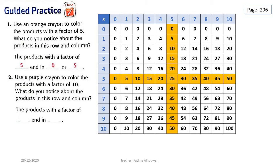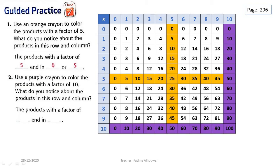Excellent, grade 3. Great job! Let's see question number 2. Use a purple crayon to color the products with a factor of 10. Let's see number 10 here — here it is. This is number 10. So this is the row of the product with a factor of 10, and this is the column of the product with a factor of 10. Interesting. So we will color this row and this column with purple.